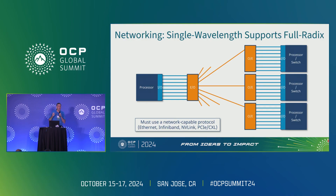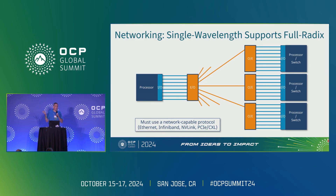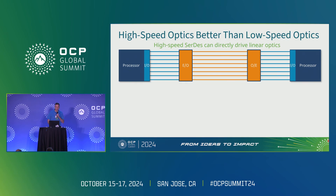Another very important aspect is you need to observe the currency of the data center, the currency of the AI cluster. You need to trade in a currency that's understood by the AI cluster, which is Ethernet, InfiniBand, NVLink, PCIe, CXL — that's the currency of clusters. If you do some proprietary anything, it just doesn't work in a cluster unless you design the entire cluster by yourself. So those are two very important things related to networking in these systems.